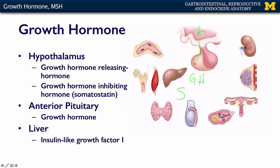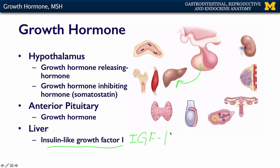When the anterior pituitary is stimulated, it makes growth hormone, which acts on lots of different tissues. But its main function is on the liver. The liver then synthesizes another peptide called insulin-like growth factor one, also known as IGF-1. IGF-1, secreted from the liver, acts on bones, acts on muscle, and acts on many other tissues to increase the mitotic rate and increase growth of those tissues.